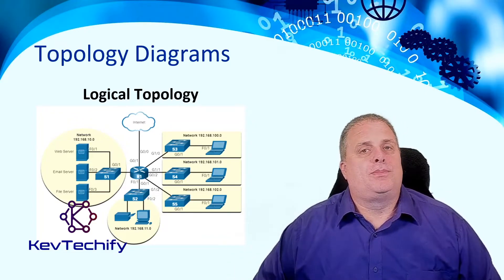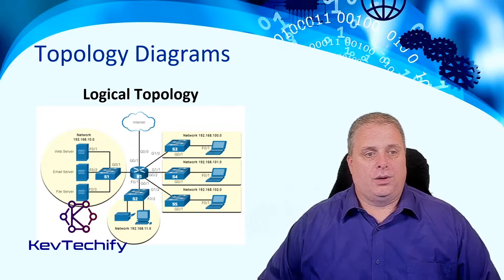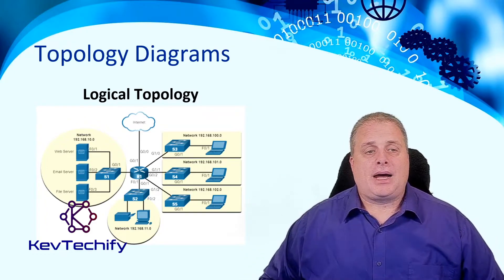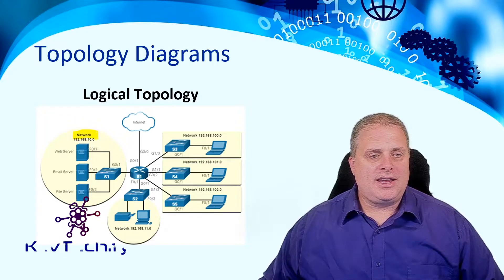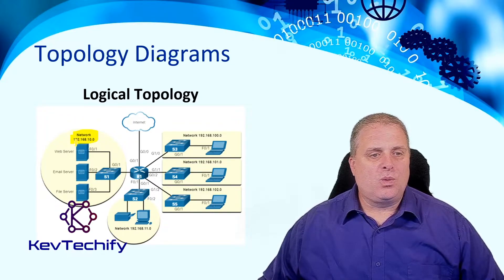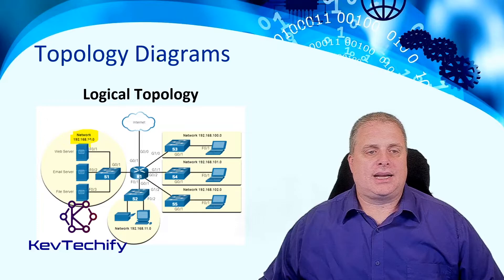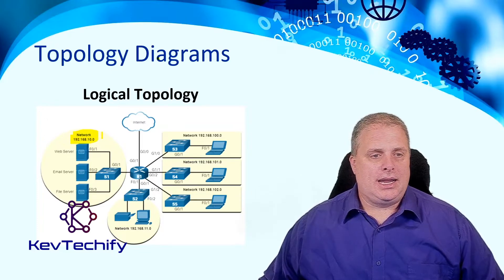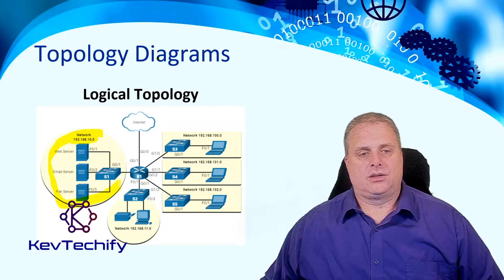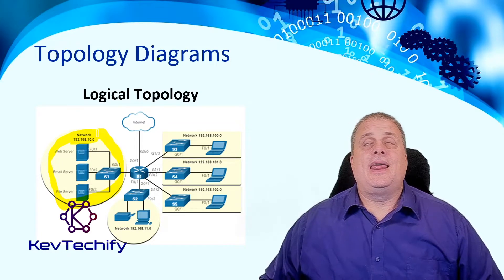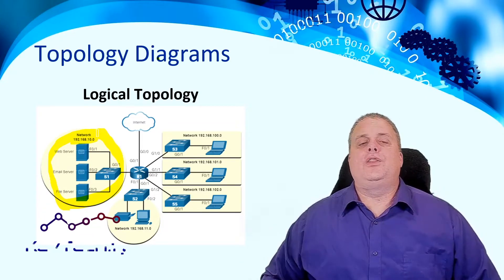Here, with our logical topology, notice, instead of having a room here, we have a network. So, network 192.168.10.0, it is this. And all of these devices are included in that network, regardless of where they're located.